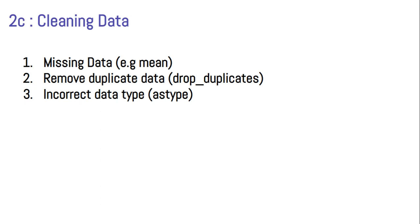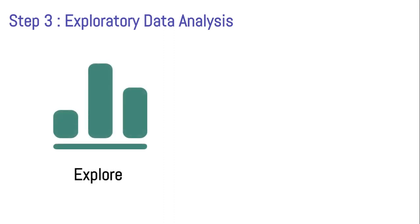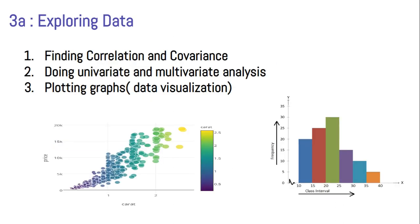That was step two — data wrangling. Let's move on to step three — exploratory data analysis — probably the most important step of the entire flow. In EDA you majorly do two things: first you explore, and second you augment your data. Exploring is simple — you find correlations, find co-variance between two columns, do univariate analysis like value counts or histogram plots on a particular feature, or do bivariate analysis where you take two columns like a feature and a target and plot a scatter plot to see if there is a linear relation. Plotting graphs using Seaborn and Matplotlib all comes under this step.